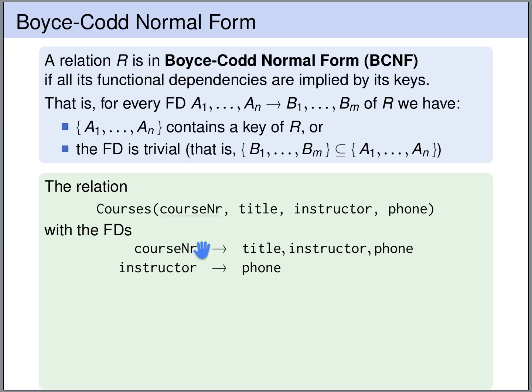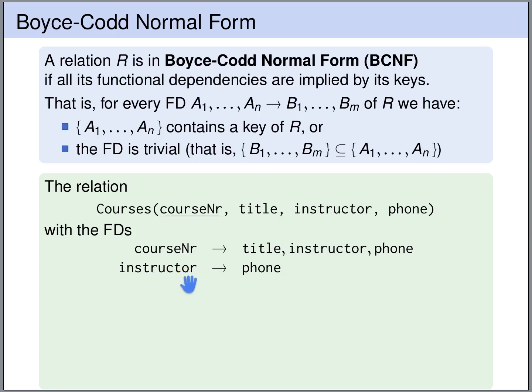The closure of the left-hand side, if it contains all the attributes of the relation, then the left-hand side contains a key. If we compute the closure of course number, we get course number, title, instructor, and phone — all the attributes. So indeed the left-hand side contains a key. So the first functional dependency is fine, it's implied by a key. Now the second functional dependency — the left-hand side is instructor. Is this a key of this table? Let's check.